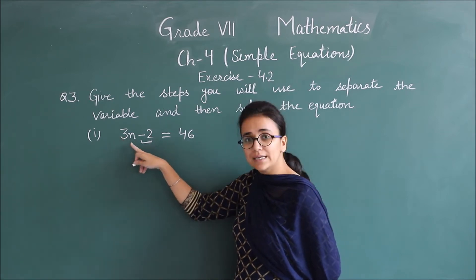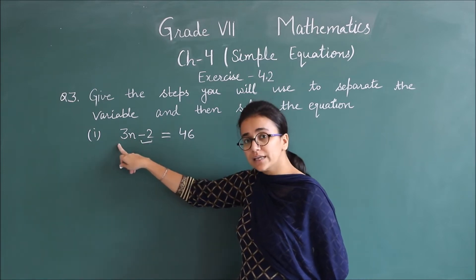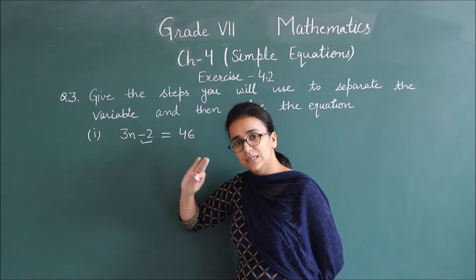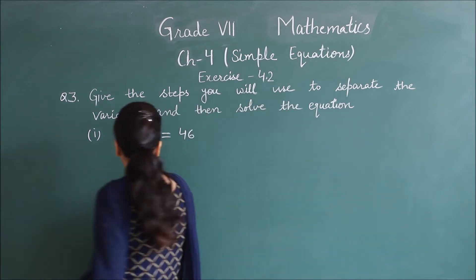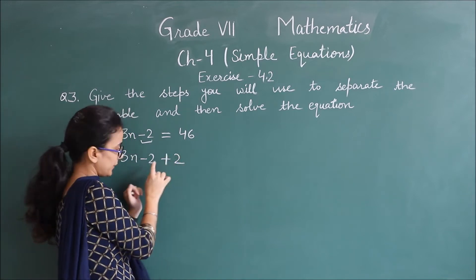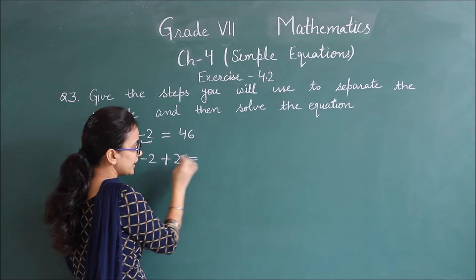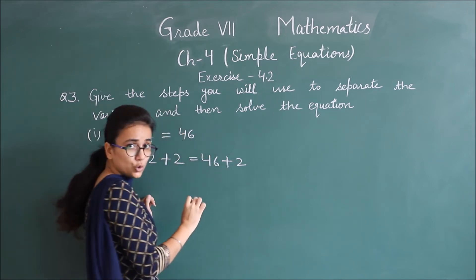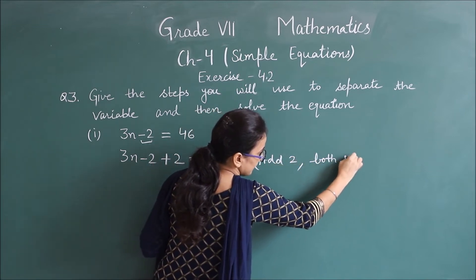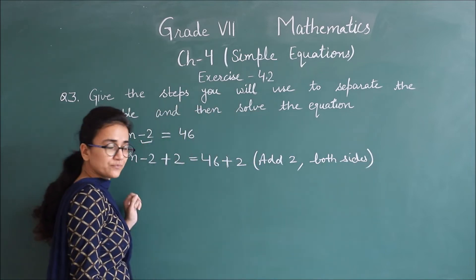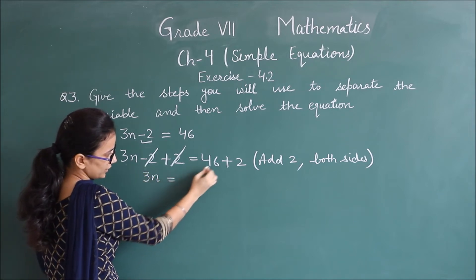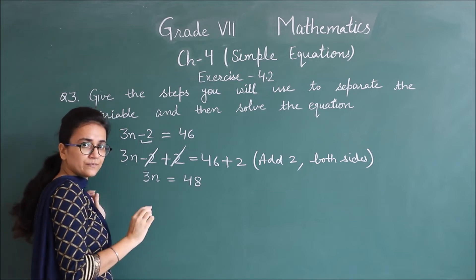Then we'll have 3n left. Now to remove 3 from 3n, what do we need to do? Divide by 3, because 3 is multiplied. So first step is: 3n minus 2 plus 2. We need to remove minus 2. If we did it on left side, then on right side also plus 2. We added 2 on both sides. Minus 2 and 2 cancel. Here we get 3n, and here 48. Clear?